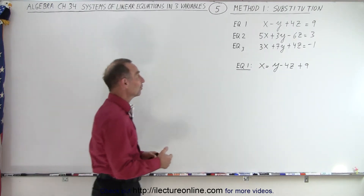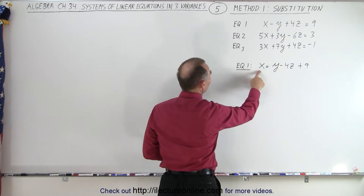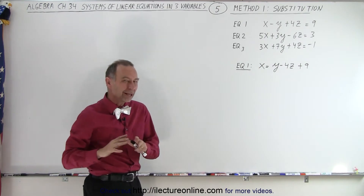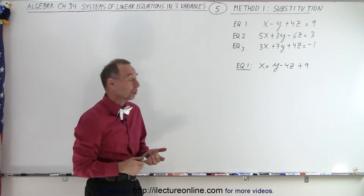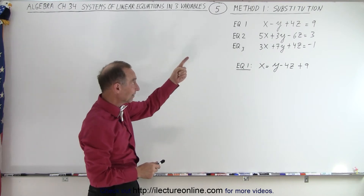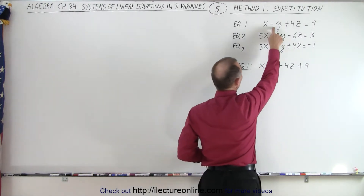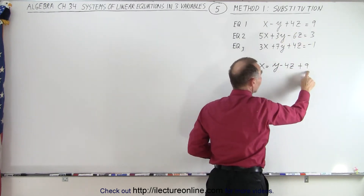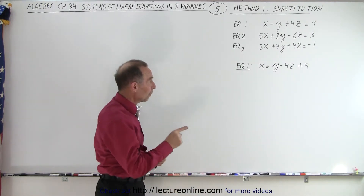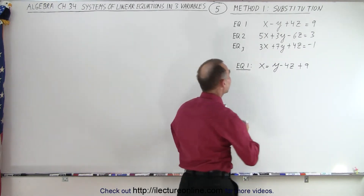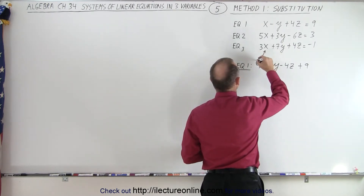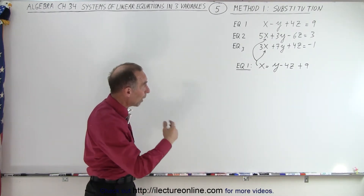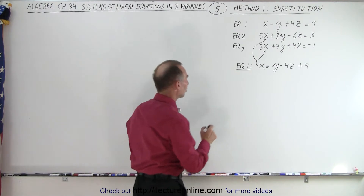As we saw in the previous video, we took the first equation and solved it for x in terms of the other two variables. I labeled the three equations — that's not a bad idea to keep track of which equation we're dealing with. So equation one, in a different format, by moving the minus y to the right to make it plus y, and the plus 4z to the right to make it minus 4z. The plus 9 is still plus 9 on the right side. Now we're going to plug that into our second and third equations instead of x — we replace x with y minus 4z plus 9.